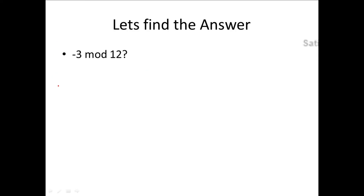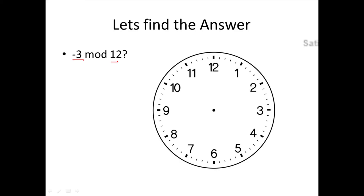Now the question is how to compute minus n mod k — we have a negative number. Since we are using mod 12, I'll take the clock again for reference. When computing 3 mod 12 we went clockwise; since it's minus 3, we go in the anticlockwise direction. Counting minus 1, minus 2, minus 3, the answer is 9. So minus 3 mod 12 equals 9.